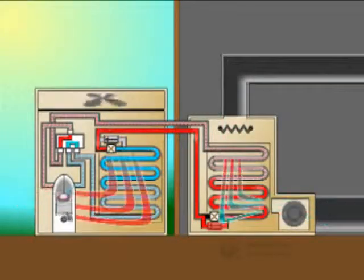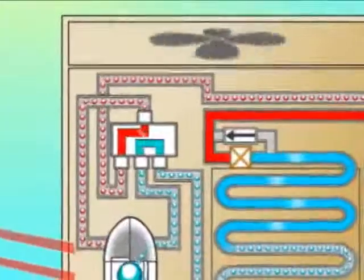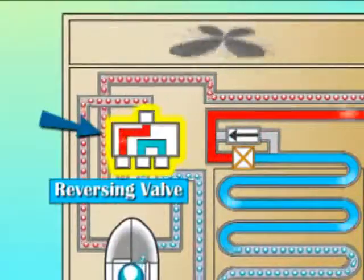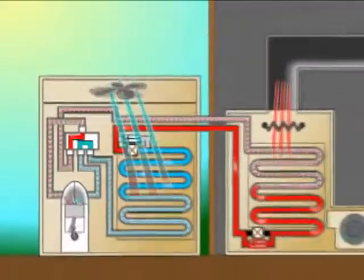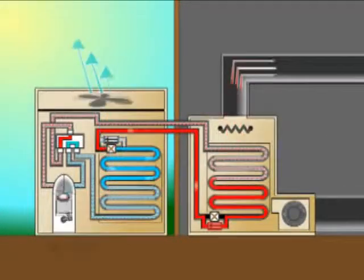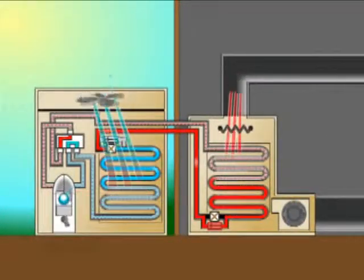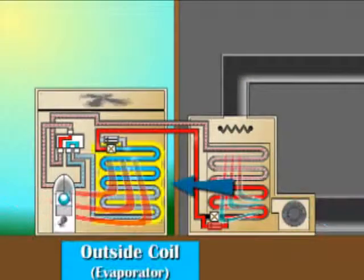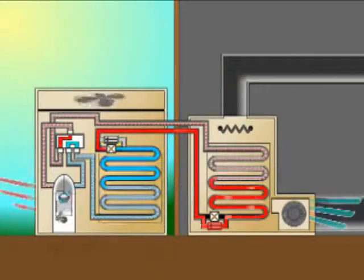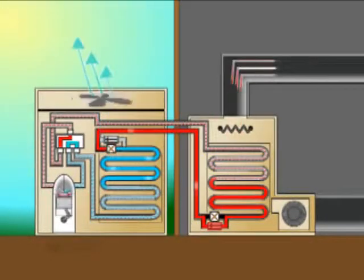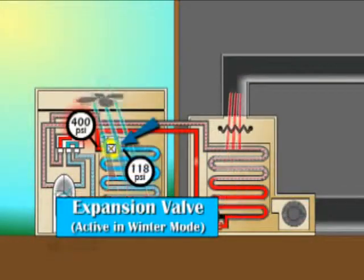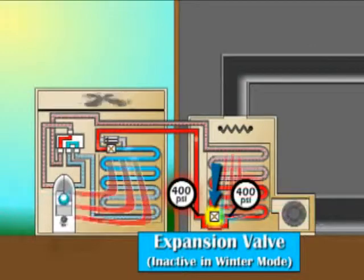During the winter mode, the reversing valve reroutes the refrigerant path, thereby making the outside coil function as the evaporator and the indoor coil as the condenser. The heat is absorbed from the outside air by the evaporator, then brought inside and released by the condenser to heat the home's air. Also notice the outdoor expansion valve is now active as the indoor expansion valve is bypassed.